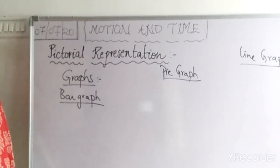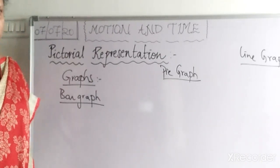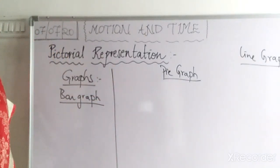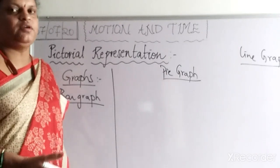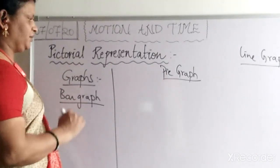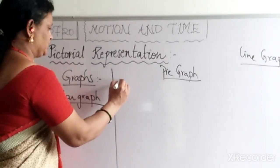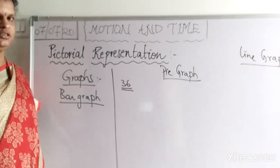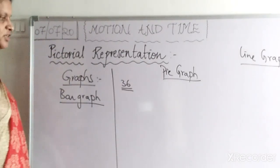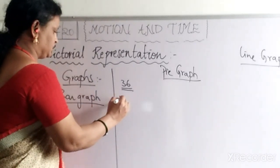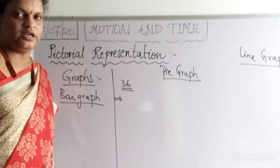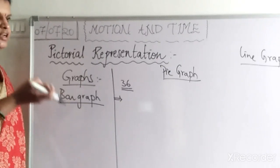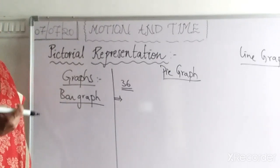Instead of going directly into the graph topic, we will take some data first, because to construct any graph we need data. The data I am taking here is: in our 7th class, there are 36 children. These 36 children come to school using different vehicles, and some of them come by walking.